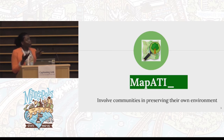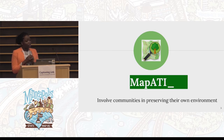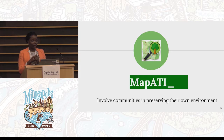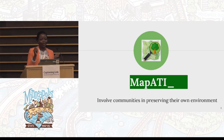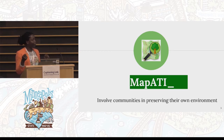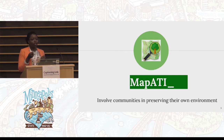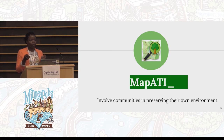I want to present to you the MapATI project. MapATI means 'map of the tree.' The word ATI is the word in our language at Togo — we call it MENA. It means tree. ATI means tree in MENA. The project is to sensitize the population and the community through OpenStreetMap to fight climate change.